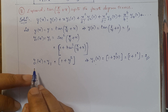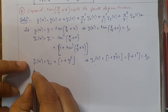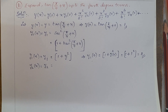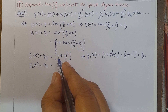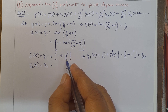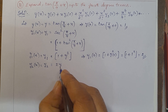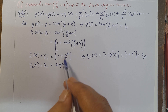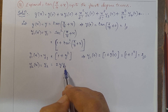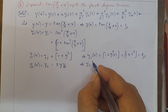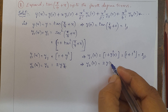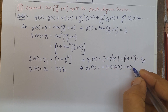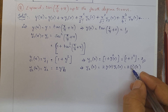Now find y2(0). Differentiating y1(x) = 1 + y², we get y2 = 0 + 2y·y1 using the chain rule. So y2(0) = 2·y(0)·y1(0) = 2 × 1 × 2 = 4. So y2(0) = 4.